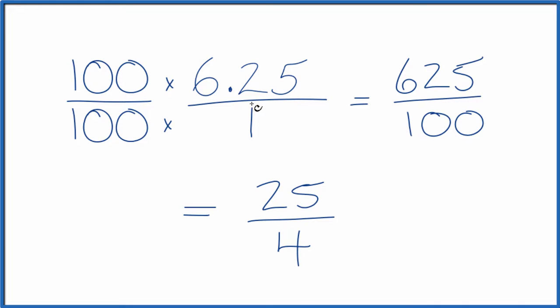So the decimal 6.25 equals the fraction 25 over 4. This is an improper fraction because the numerator is larger than the denominator. So let's change it to a mixed number.